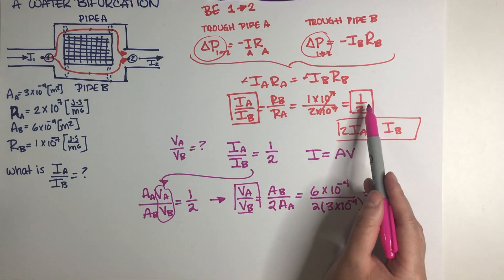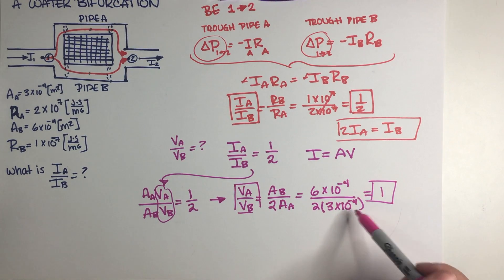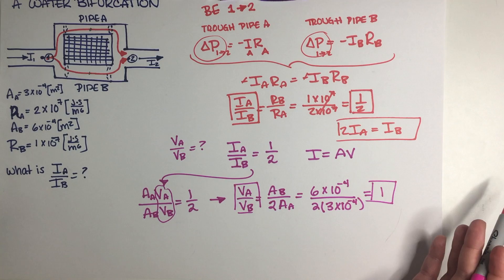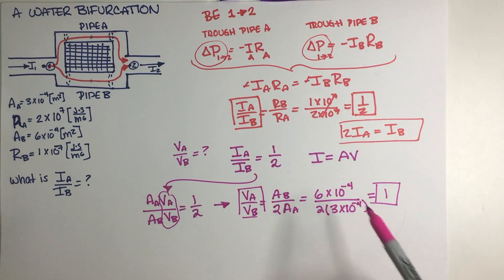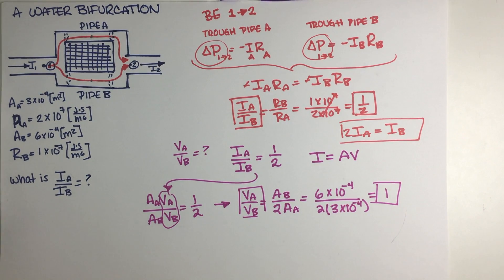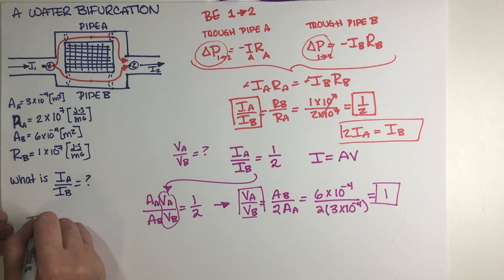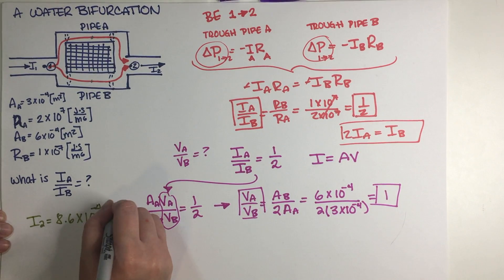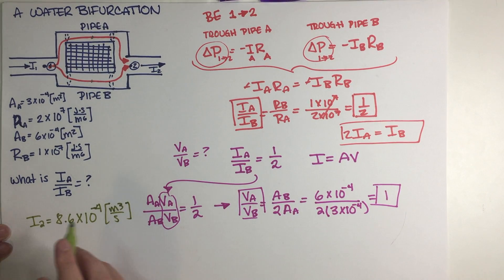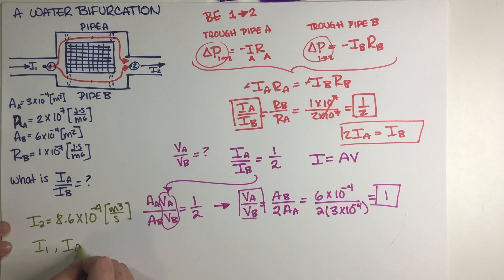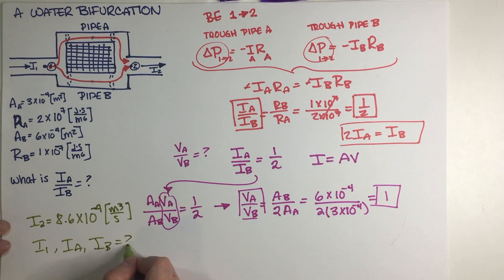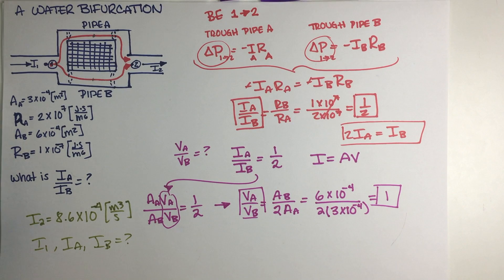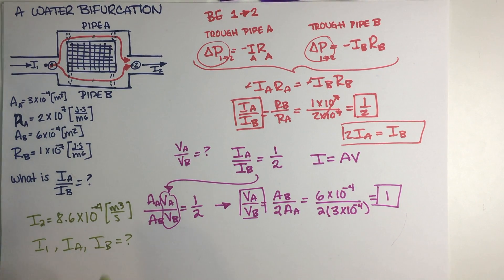If you got the right ratio in part A and used the correct procedure here, you'd get a different answer but would still get full credit — I graded this quiz and gave full credit for a correct procedure. Now for part C: if the current I_2 flowing out of the pipe is observed to be 8.6×10⁻⁴, what are I_1, I_A, and I_B respectively?